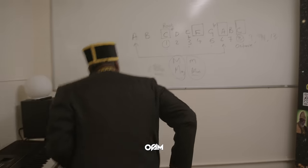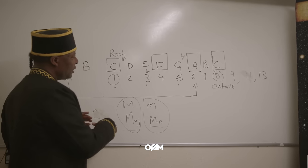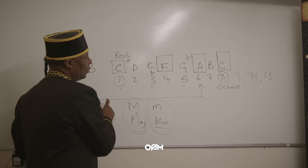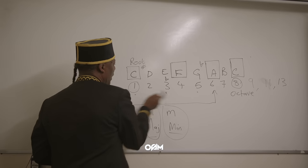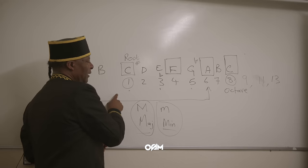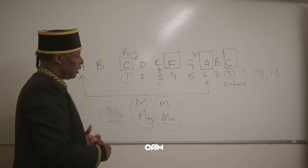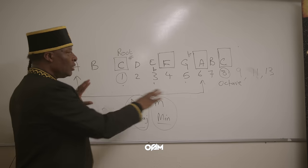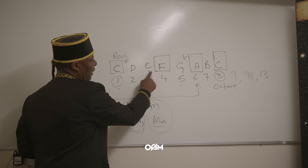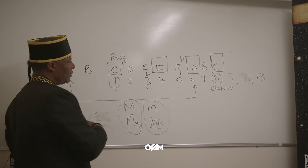Once you know the number system — one, two, three, four, five, six, seven — you can play different types of music using chord progressions. A two-five-one is very common, especially in jazz, and it's also called a turnaround because to get back to the one you go two, five, then one. If a musician knows the number system and you're in the key of C major, all you have to say is 'two five one' and they'll know to play D, G, then C.